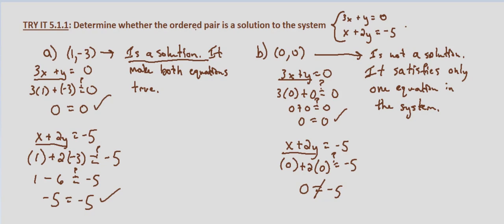So in this case, (1, -3) was a solution to our system of equations, and (0, 0) is not a solution to the system of equations.